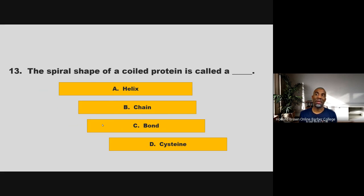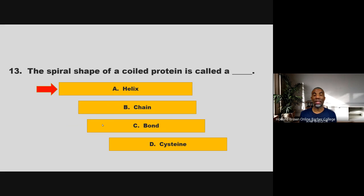The spiral shape of a coiled protein is called a blank. Is it helix, chain, bond, or cysteine? If you chose A, helix, you are correct.